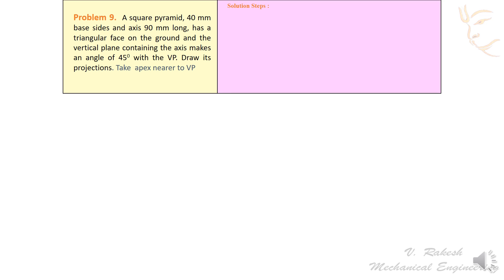Solution step: In the given problem, the triangular face on the ground means the triangular face on the HP. Assume it's standing on the HP. Its top view will show true shape of base, that means square. Draw the square of 40mm side with one side vertical top view and taking 90mm axis, project front view that is isometric triangular.